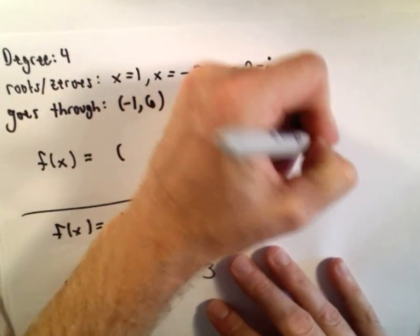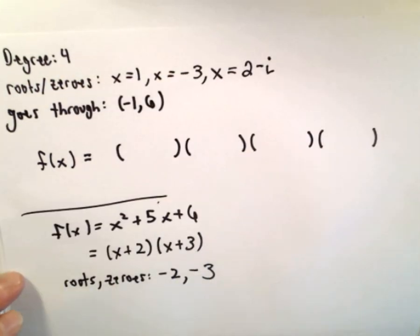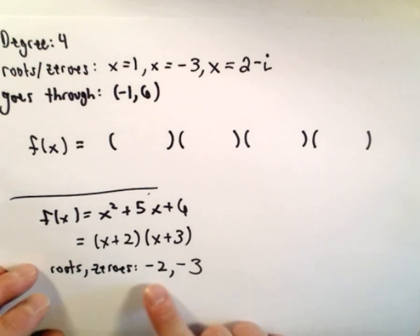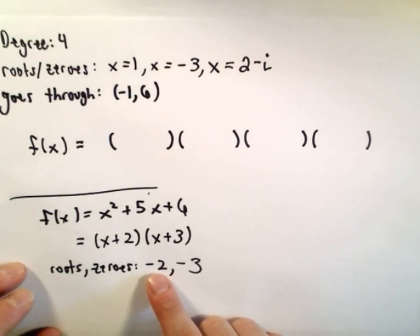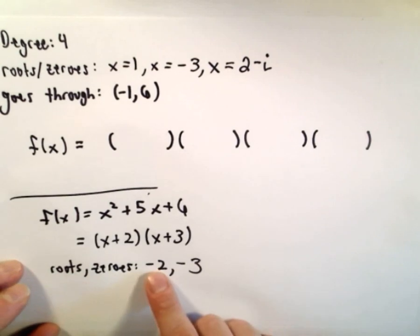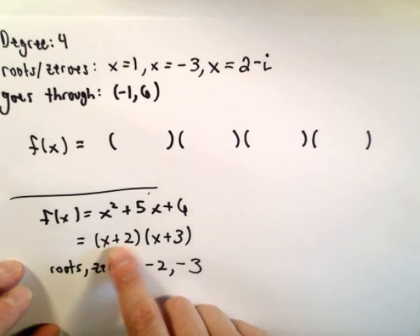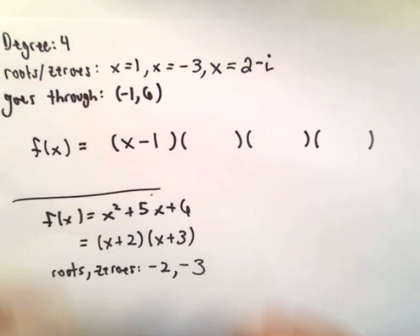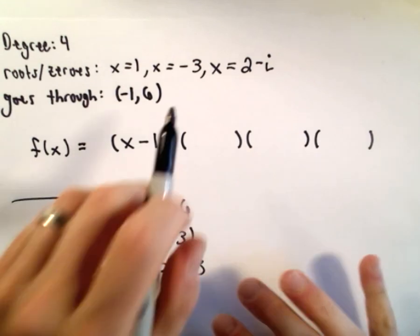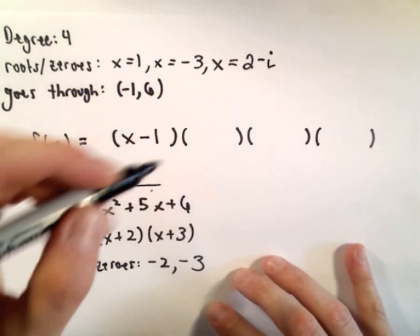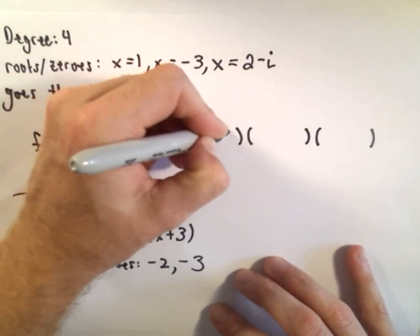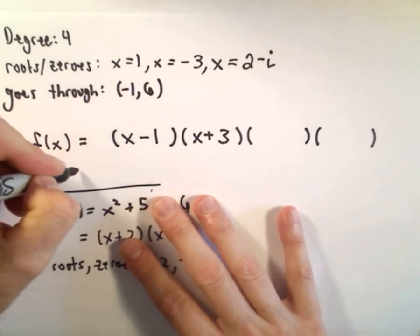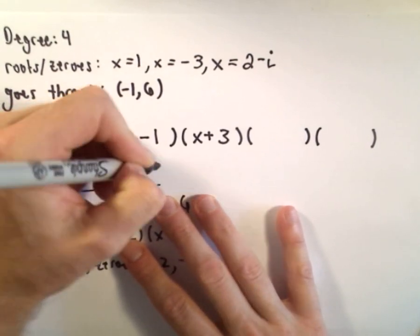Since our polynomial is degree 4, I'm going to use four sets of parentheses. You take the opposite sign — so if one of the roots is x equals 1, we're going to have a factor of x minus 1. Likewise, if x equals negative 3 is a root, we're going to have a factor of x plus 3.